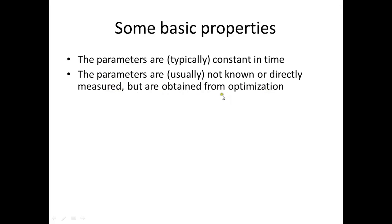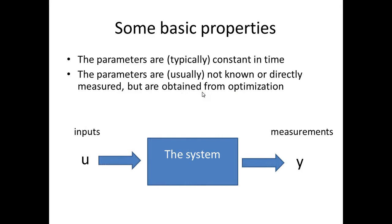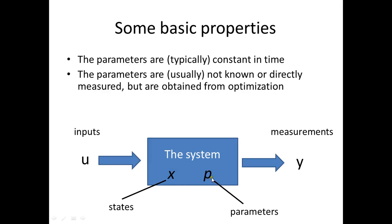Just as the states, the parameters are usually not known and not measured — they can be measured but usually not. We need to get values for them somehow, and a very common way in systems biology is to get them from optimization. We'll talk more about how to do this in later videos. In the control engineering view, the parameters are also inside the system box. The main difference is that states depend on time via differential equations whereas parameters don't need differential equations because they are constant in time.